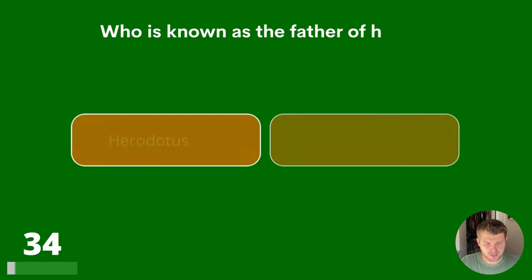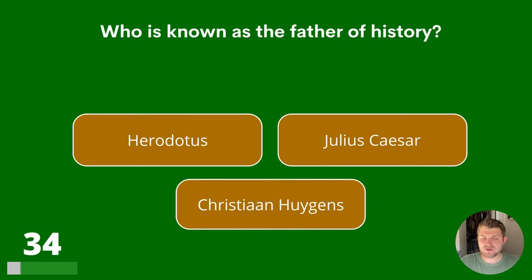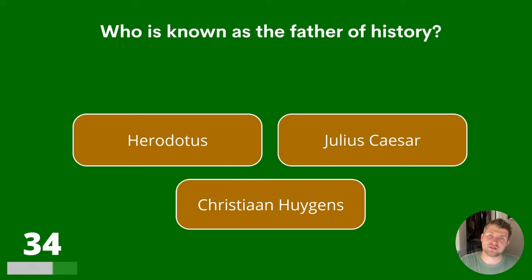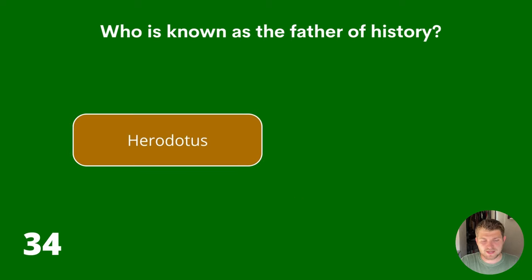Question 34. Who is known as the Father of History? Herodotus, Julius Caesar or Christiaan Huygens? The answer is Herodotus.